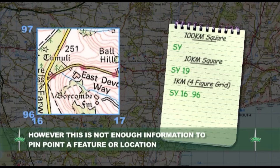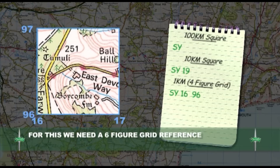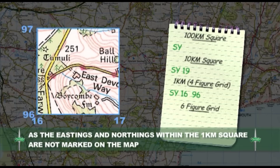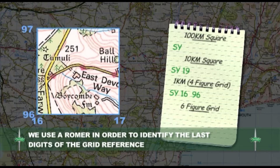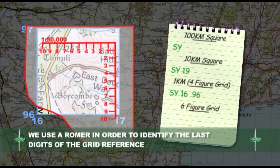However, this is still not enough information to pinpoint a feature or location. For this, we need to obtain a 6-figure grid reference. As the Eastings and Northings within the 1km square are not marked out, we use a ROMA to provide the means to identify the last digits of a grid reference.